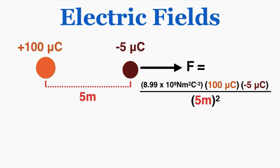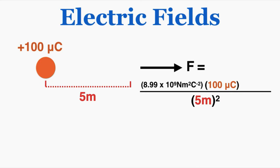There's some property of that one point in space — where no matter what charge you put in it, it's going to get multiplied by these specific numbers. Scientists figured that because that point in space has this property regardless of which charge is placed next to it, they gave it a special name and called it the electric field.